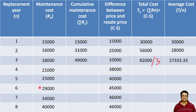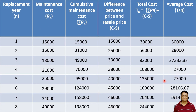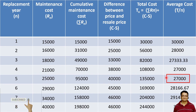We will directly compute the values for the remaining years using the same procedure. The PDF of this solution is available in the description section. The minimum average cost value is 27,000 rupees, which occurs for both the fourth and fifth year. It is best to replace the machine at the end of the fifth year, because the cost increases again from the sixth year onward. Using the machine beyond five years means paying more, so five years gives the minimum average cost.